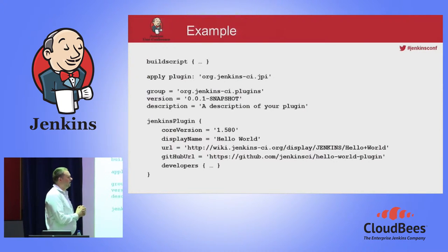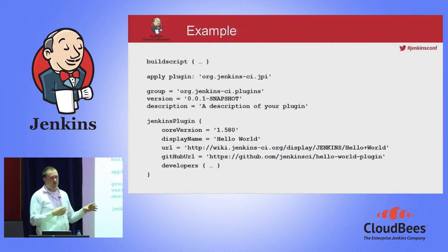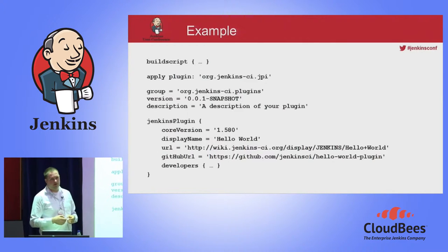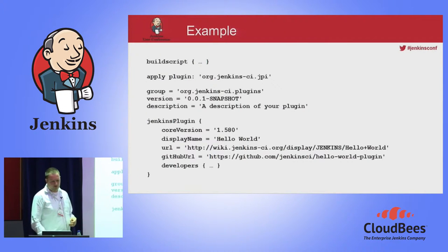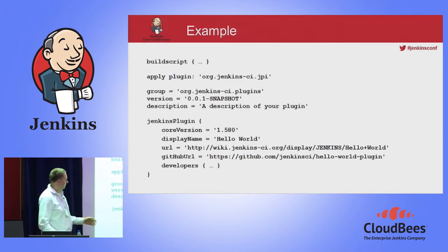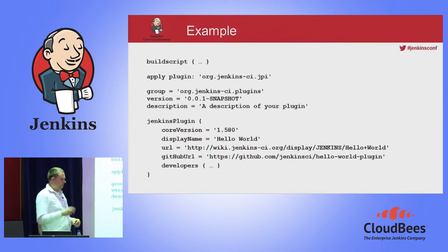Here is an example of a minimal Gradle build script. You have to define a build script section at the top of the file which defines where to get the plugin file — that will change when we're able to push the plugin to the Gradle plugin center. Then you apply the plugin and define your Maven coordinates: group ID (the obvious choice would be org.jenkins-ci.plugins), your version, and a short description. Then there's the JPI-specific configuration: target version of Jenkins, the minimum version required, and the display name for the update center — what will be shown when users install your plugin.